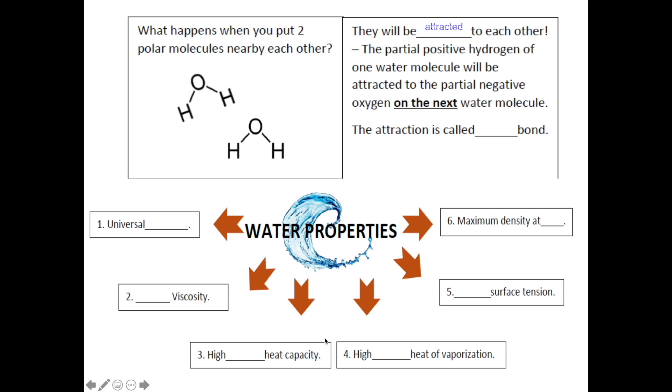Now, what happens when you put two polar molecules nearby each other? Just like magnets, two different poles will be attracted to each other. As we know, hydrogen is a partial positive end of this water molecule, and it will be attracted to the partial negative oxygen in this water molecule.